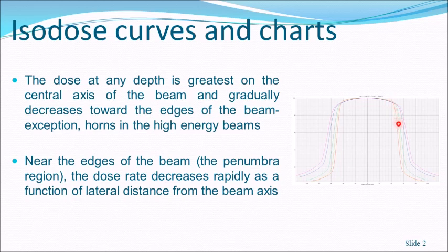Near the edges of the beam, that is the penumbra region, the dose decreases rapidly as a function of lateral distance from the beam axis. So when you go near the edges of the beam, you see a steep fall-off of dose.